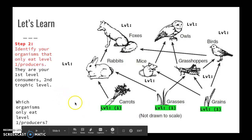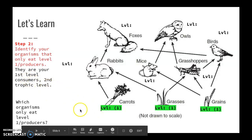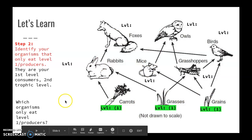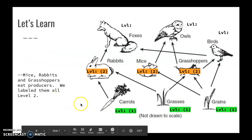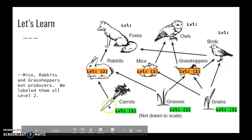Step two: identify organisms that only eat level one, or only eat producers. They are your first-level consumers, but your second trophic level. Which organisms only eat level one producers? You have to look at the arrows leaving from grasses and grains going to organisms — which animals only have arrows coming from the producers? The organisms only getting energy from producers are mice, rabbits, and grasshoppers. We labeled them trophic level two.